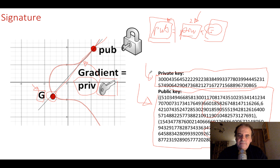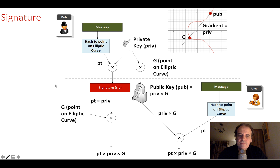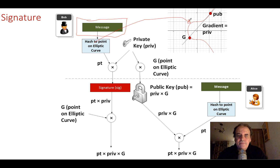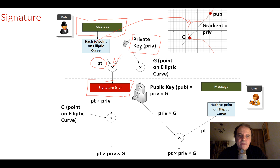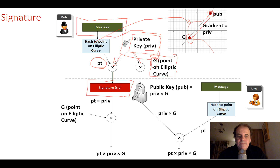This is our private key, and the value of G is our generator and is known. Here's the method we'll use to prove our code is working. We take our message and hash it to a point on the elliptic curve. We then generate a 256-bit random number and multiply that value with the point to give us our signature. So the signature is the multiplication of our private key times the hashed point for our message. The public key is then our private key multiplied by G, and we keep the private key secret while sharing the public key.